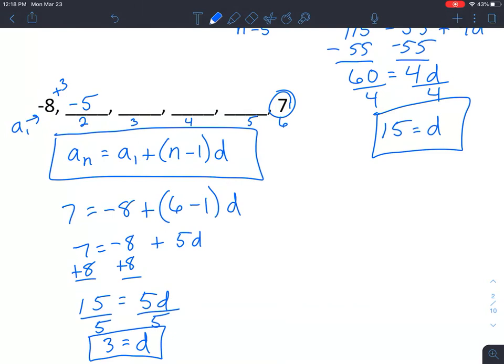Negative 8 plus 3 is negative 5. Negative 5 plus 3 is negative 2. Negative 2 plus 3 is positive 1. Positive 1 plus 3 is 4. 4 plus 3 is 7. Cha-ching! Looks like we're done with that example.